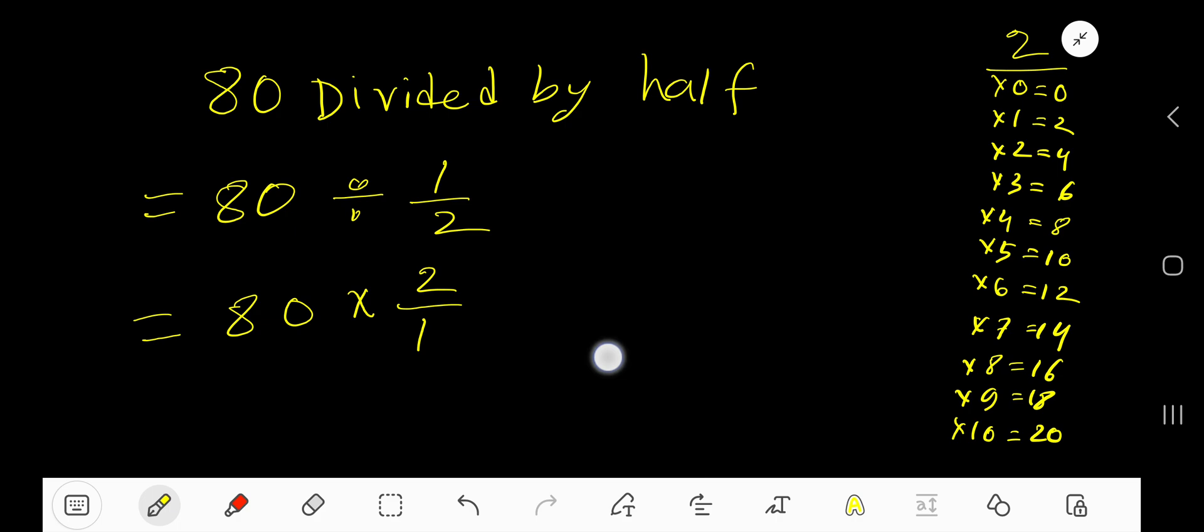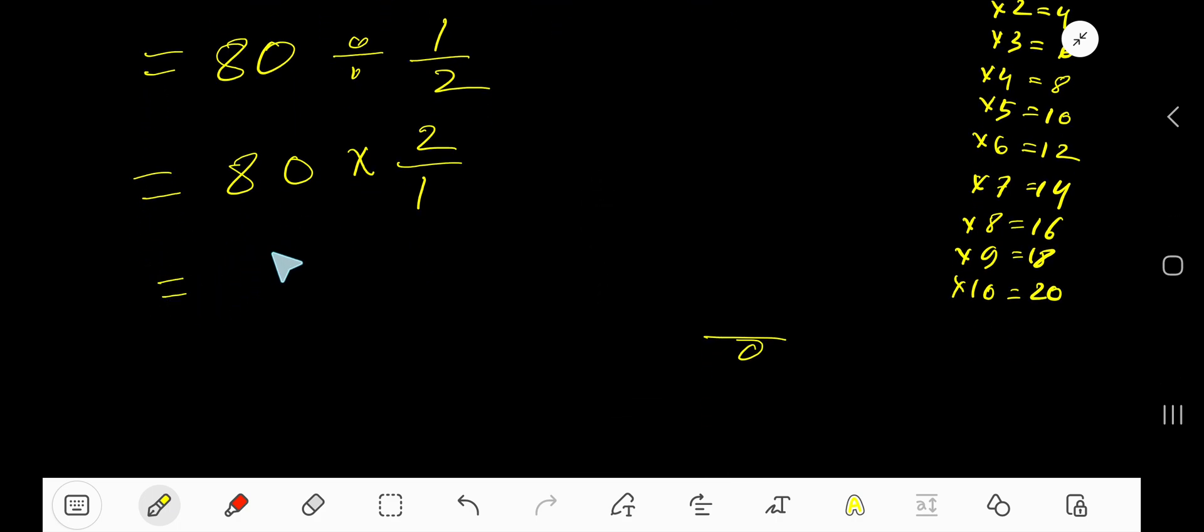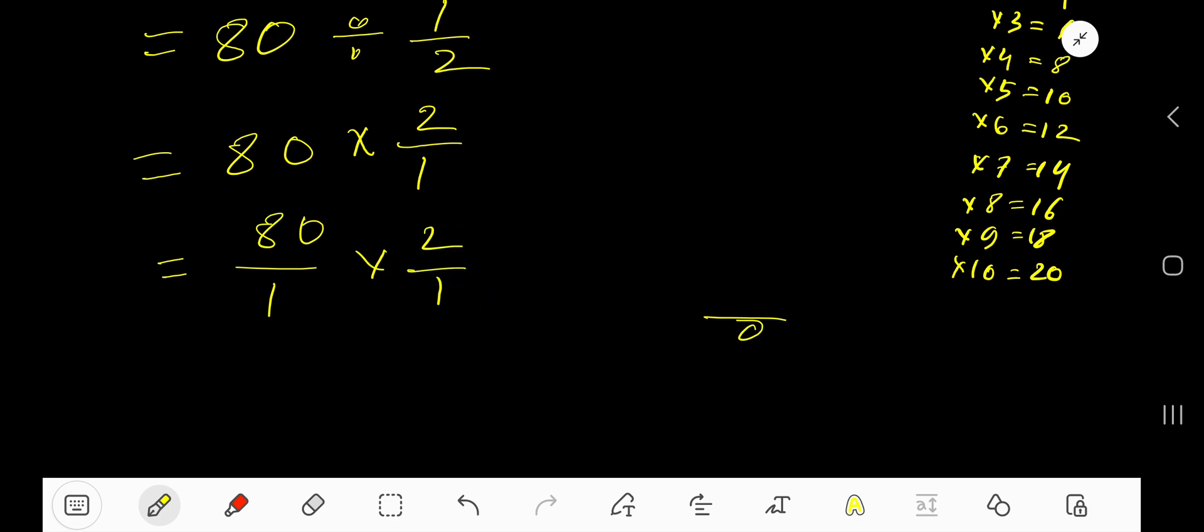Now, this is a fraction, this is a whole number. So convert this whole number as a fraction. Consider 1 as a denominator. Now multiply top number together and bottom number together.